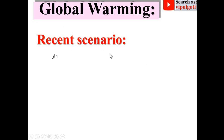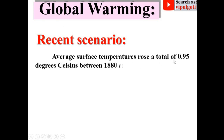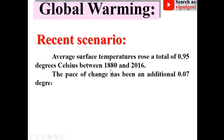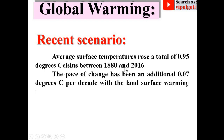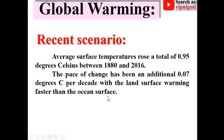Recent Scenario: Average surface temperature rose a total of 0.95 degree Celsius between 1880 and 2016. The pace of change has been an additional 0.07 degree Celsius per decade, with the land surface warming faster than the ocean surface.